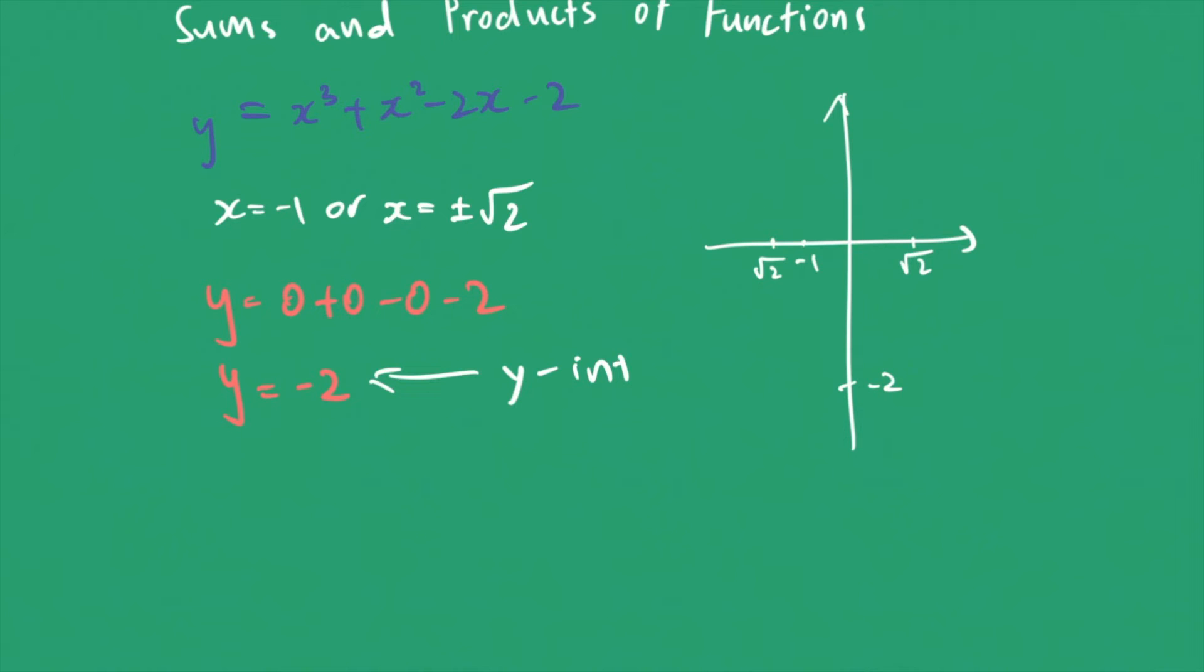Since x cubed plus x squared minus 2x minus 2 is a cubic function with an odd degree and a positive leading coefficient, the graph would start from here to there. So the graph would look like this.